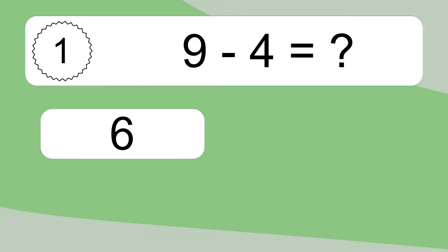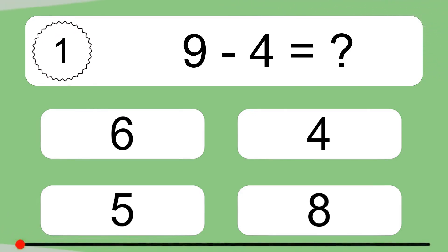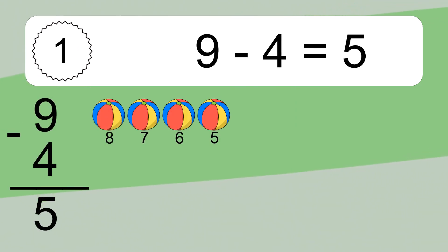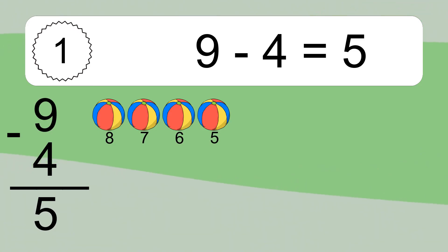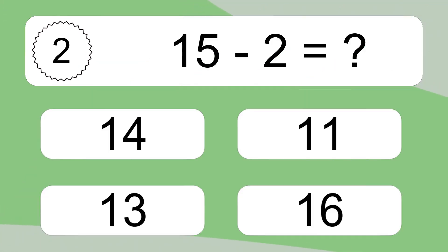9 minus 4 equals what? 9 minus 4 equals 5. Let's count it: 8, 7, 6, 5.